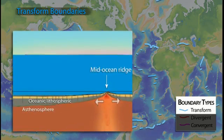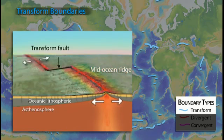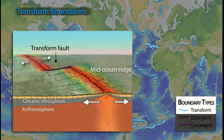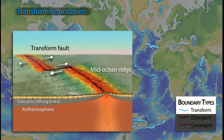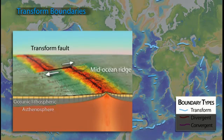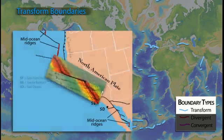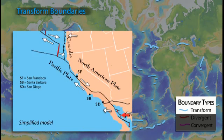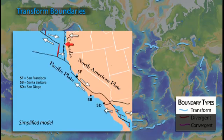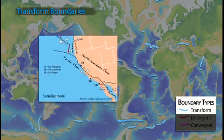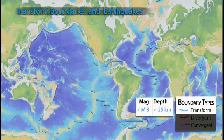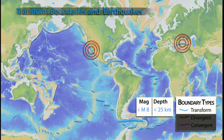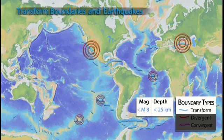Lithosphere is neither created nor destroyed along transform boundaries, which connect segments of spreading oceanic ridges and other plate boundaries. Transform boundaries can also cut across continents, as the San Andreas zone does in California, where it connects the East Pacific Rise to the Cascadia subduction zone. Shallow earthquakes on long transform boundaries that cut continental crust can approach magnitude 8, whereas those on oceanic transform boundaries tend to be much smaller.